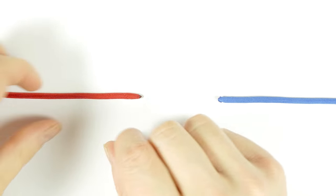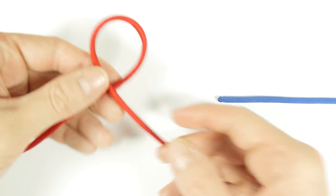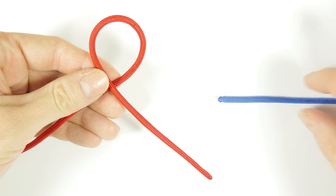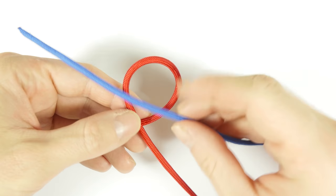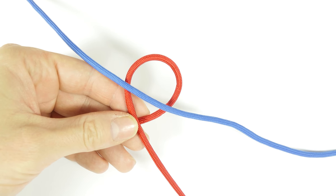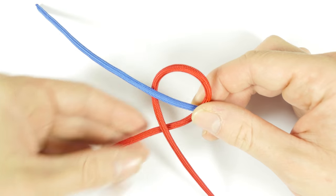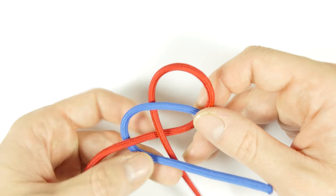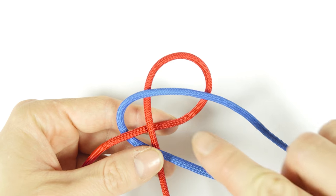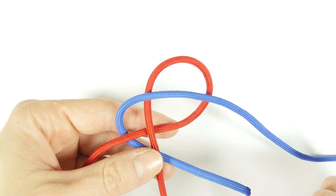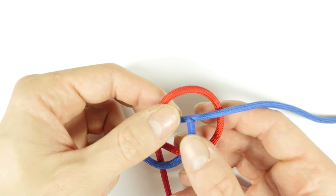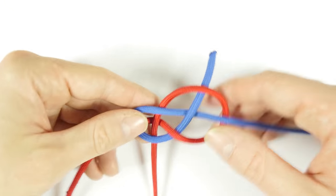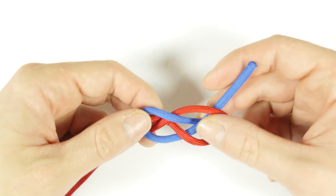The first way of tying the Carrick Bend is the most basic. You take one end of your rope and you twist it into a loop, like this. Then you pick up the other end, and you place it over the loop. Then, using the end, you travel under this strand, then over the next, then going under, over, under. And with this you have tied the Carrick Bend. It's that simple.